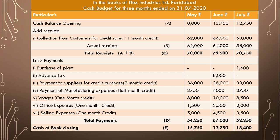The first payment: a plant costing rupees 16,000 is due for delivery in July, payable 10 percent on delivery and balance after three months. Since delivery takes place in July, 10 percent of 16,000 equals rupees 1,600, which is paid in July. The rest will be paid in later months, which fall outside our budget period, so we take only 1,600.